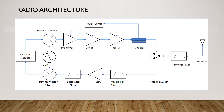Each radio component plays a unique and significant part in achieving the end goal of receiving and transmitting information wirelessly over a long distance. In figure 4.1, the antenna is the first component from the left of the radio system. The antenna is used to transmit and receive signals. The signal received by the antenna will be routed to the receiver section by the antenna switch. In the same way, the signal to be transmitted will be routed to the antenna via an antenna switch.